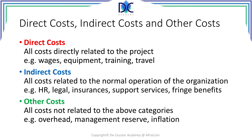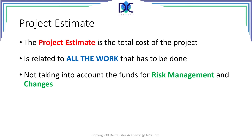So these three types of costs are important to distinguish. The project estimate is the total cost of the project. It's related to all the work that has to be done. It doesn't take into account the funds for risk management and changes. Of course, when we look at the total project, we have to include risk and changes.